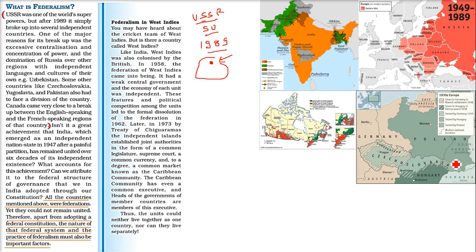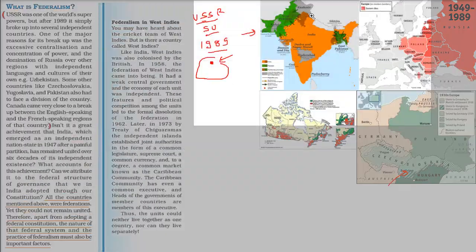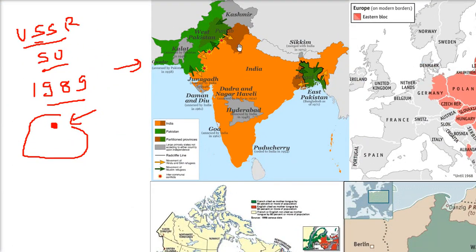Similarly, Czechoslovakia also broke. And why go far — talk about Pakistan. When India got independence, there was a partition — West Pakistan and East Pakistan. Now the West Pakistan and East Pakistan broke. Why? Because the people of East Pakistan were Muslims, but they had Bengali culture and spoke Bengali, with nothing in common with the Punjabi-speaking people of West Pakistan. So there was no similarity between them, and that is how they broke up.